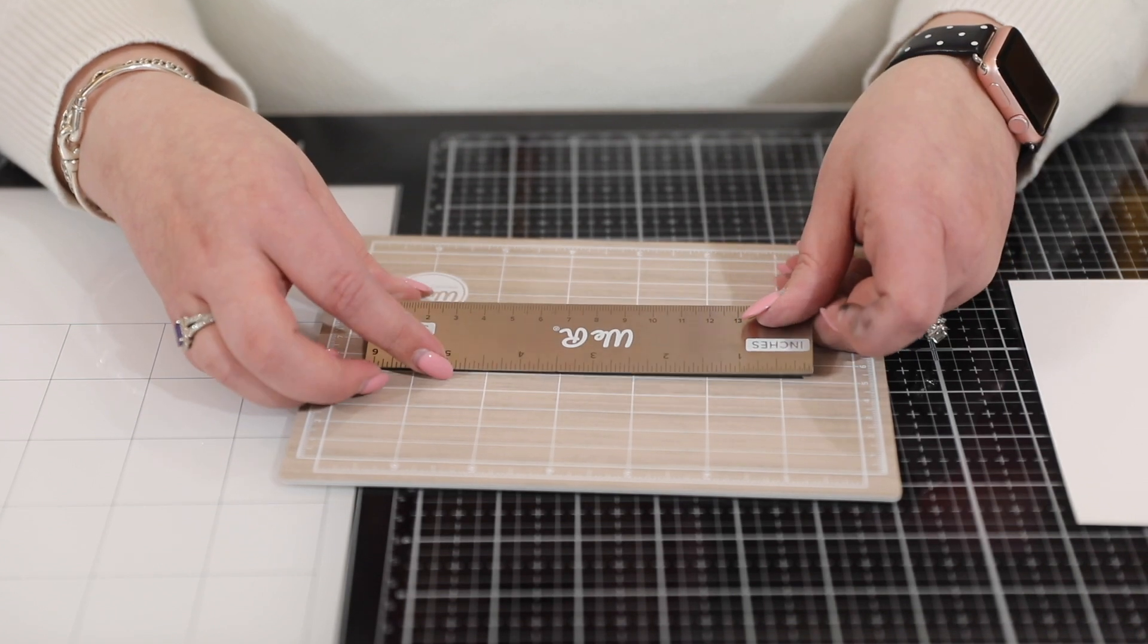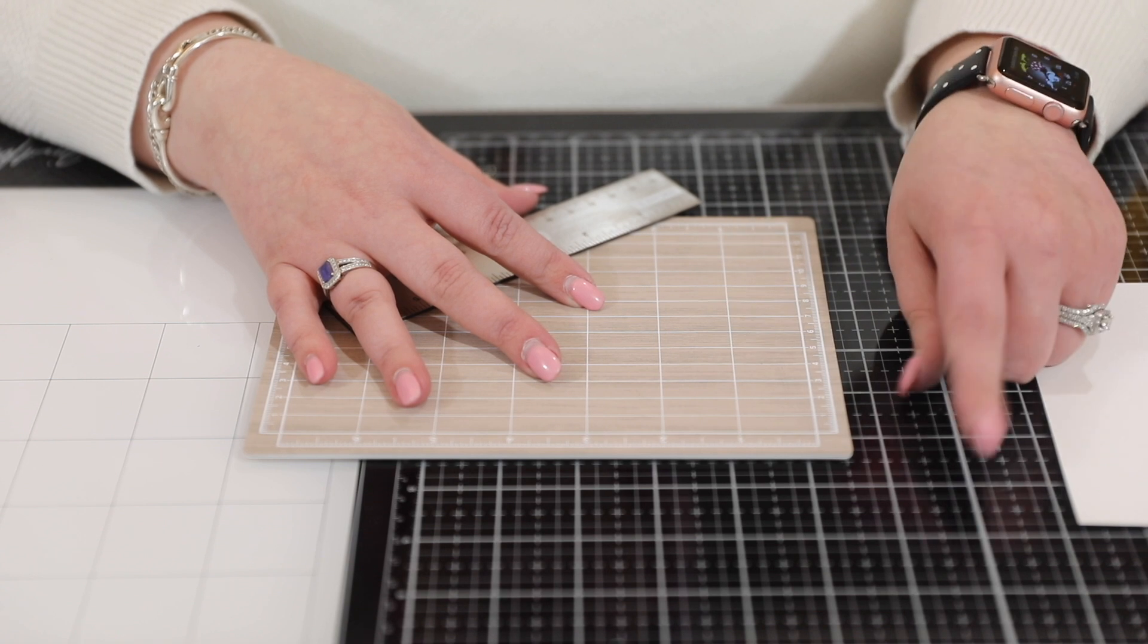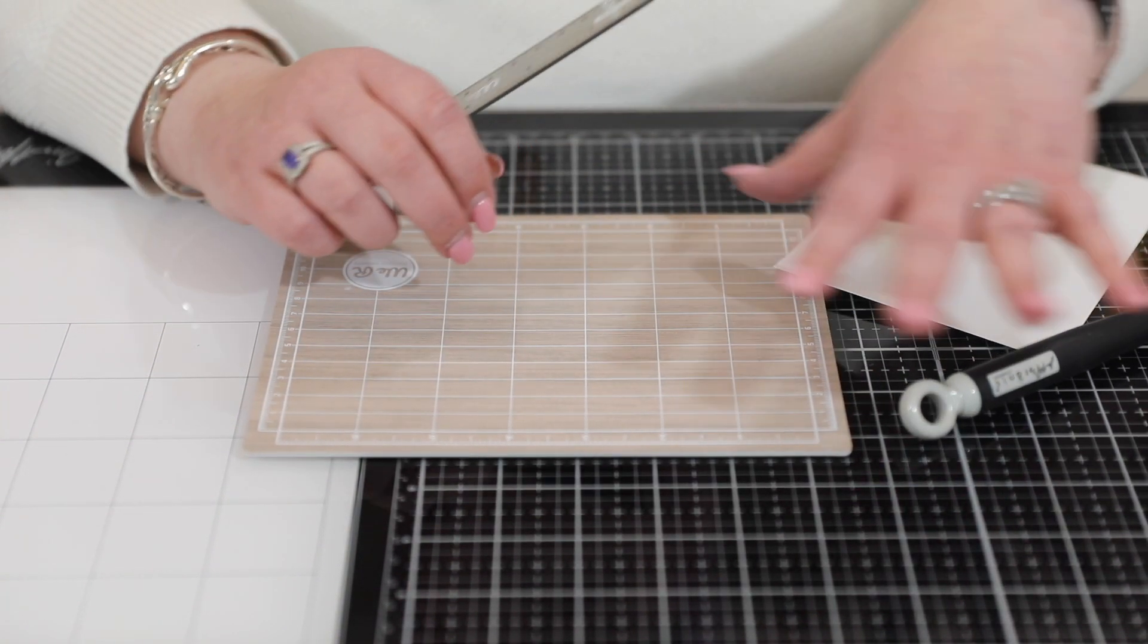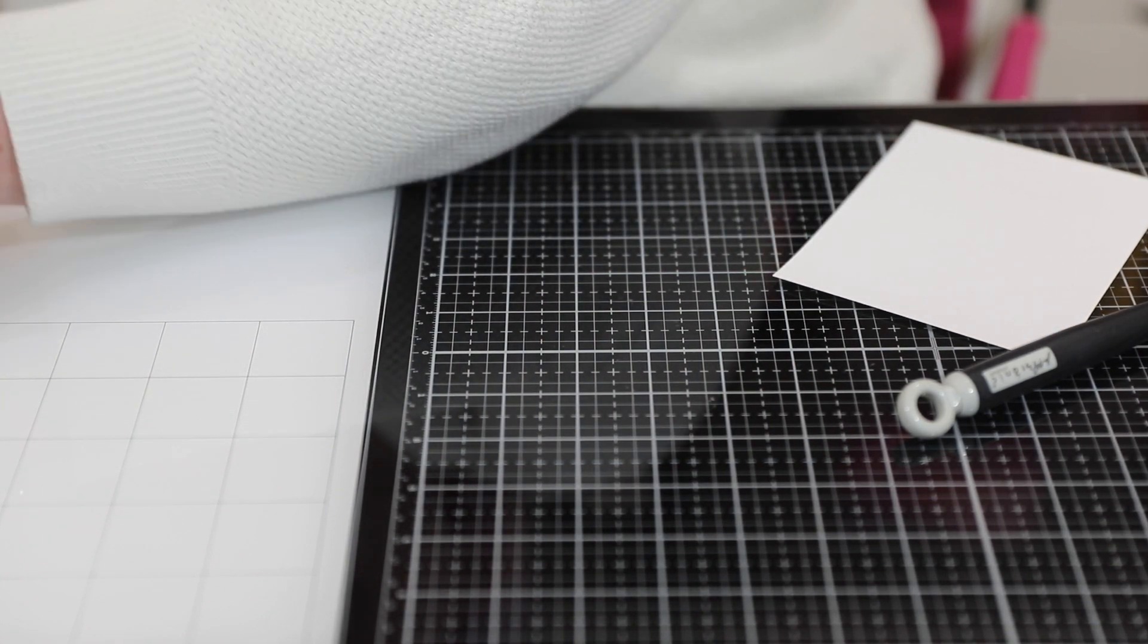What I really like is, yes I can absolutely use my Tim Holtz mat—I have all of my tools on there as well—but sometimes I have a load of mediums on here and I just want to be able to go over here and cut something. So it is really handy because I can cut on this surface.